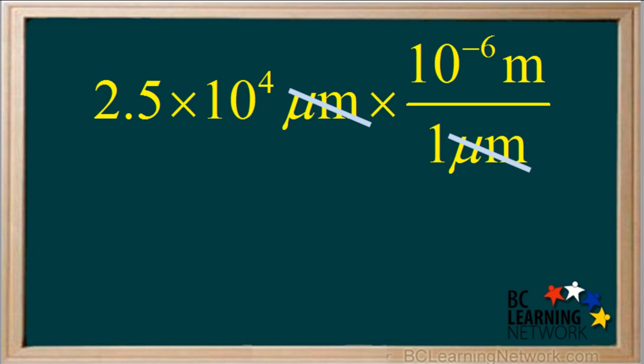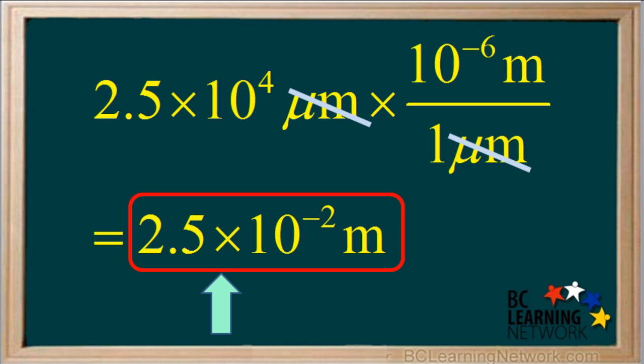We can cancel out the micrometers, and since both exponents are on the top, we add the exponents four plus negative six, which equals negative two. So the final answer is 2.5 times 10 to the negative two meters.